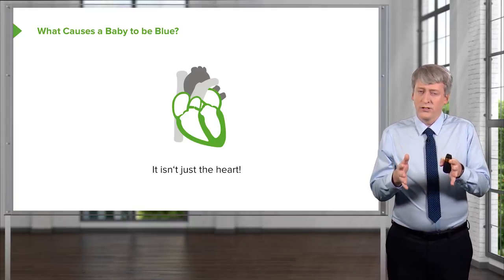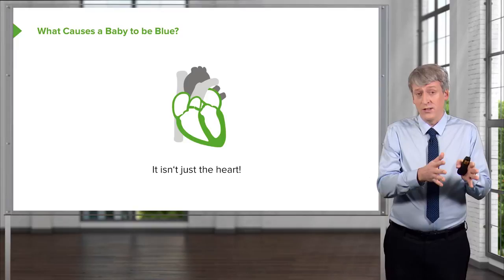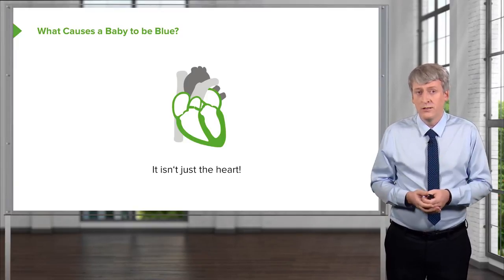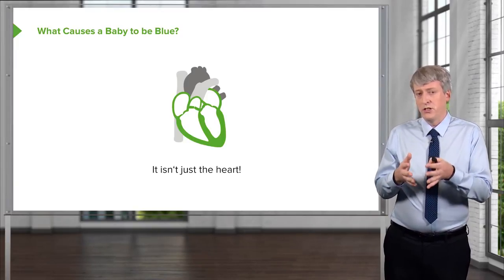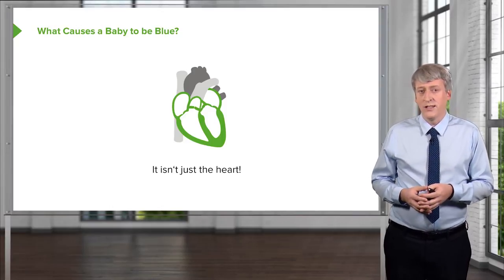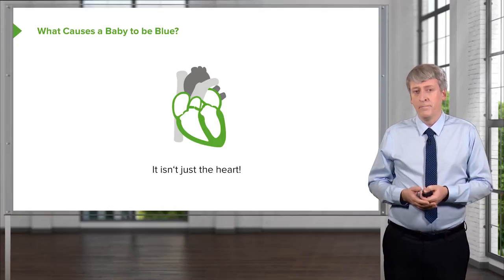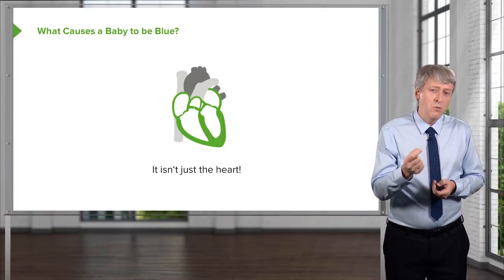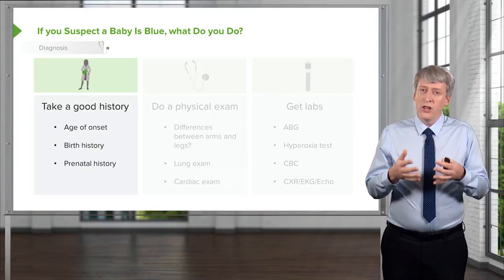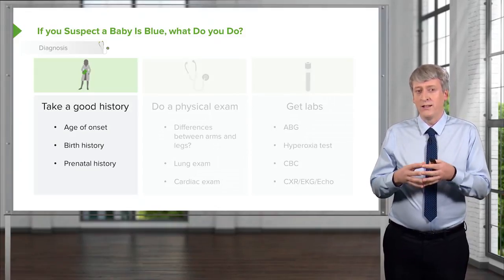Generally, cyanotic heart disease is blood that is being shunted from the right side to the left side and is bypassing the lungs. There are certain types of congenital heart disease that are classified as cyanotic heart disease, and we're going to go through those one at a time. But when you see that baby who is blue, you have to do a very thorough examination to try and figure out what exactly is the problem.